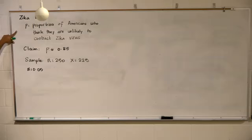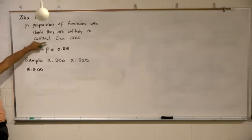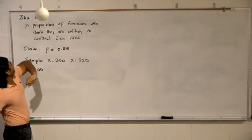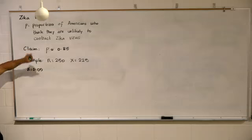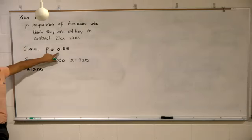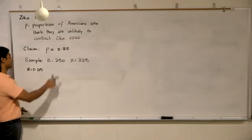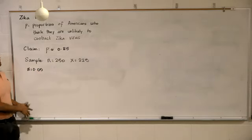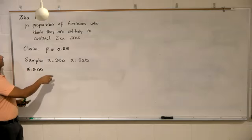So the population proportion is the proportion of Americans who think they are unlikely to have the Zika virus. A researcher's claim is that that proportion is equal to 85 percent or 0.85. We collect a sample of size